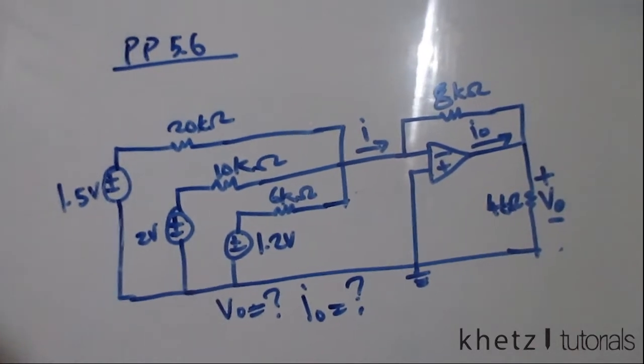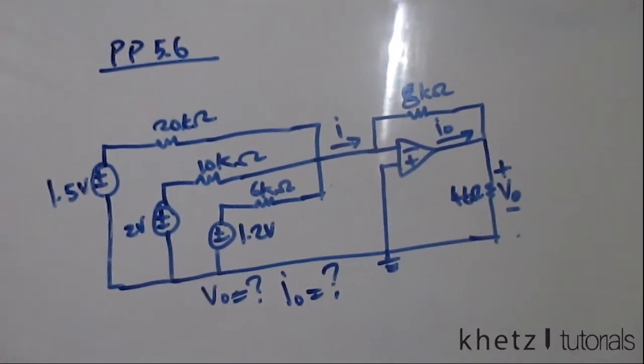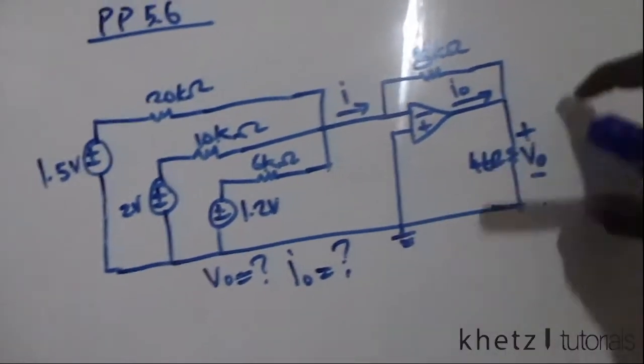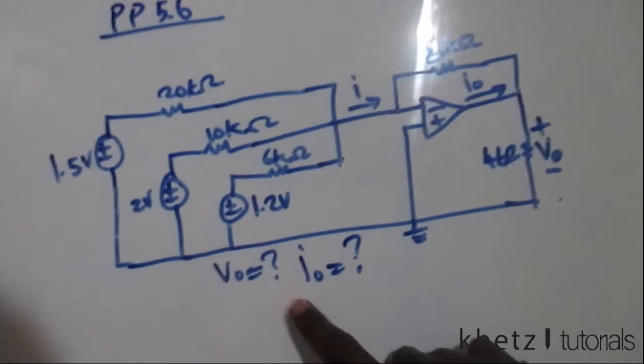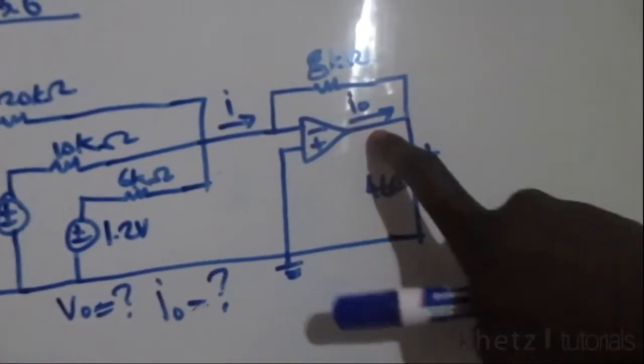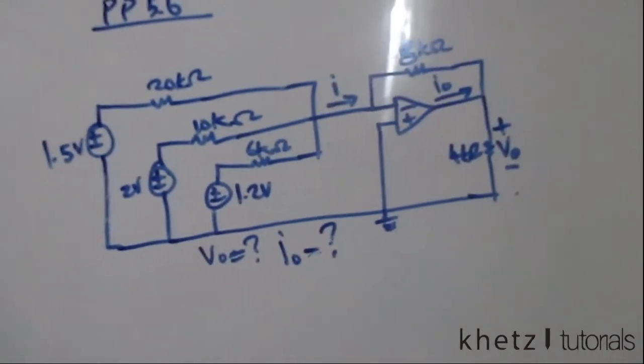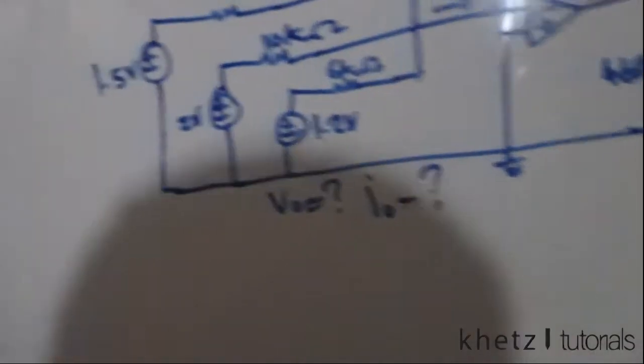Welcome to Khetz tutorials, and in this video I'll be covering practice problem 5.6. We were asked to find vo, which is the output over there, and we're also asked to find io, which is the current indicated there. As you'll notice, this is a summing amplifier.